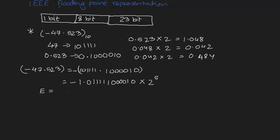Now we calculate the exponent field. We take the power value, which is 5, and add 127, since this is a 32-bit format. So 5 plus 127 equals 132 in decimal. We then convert 132 to binary, which gives us 10000100.